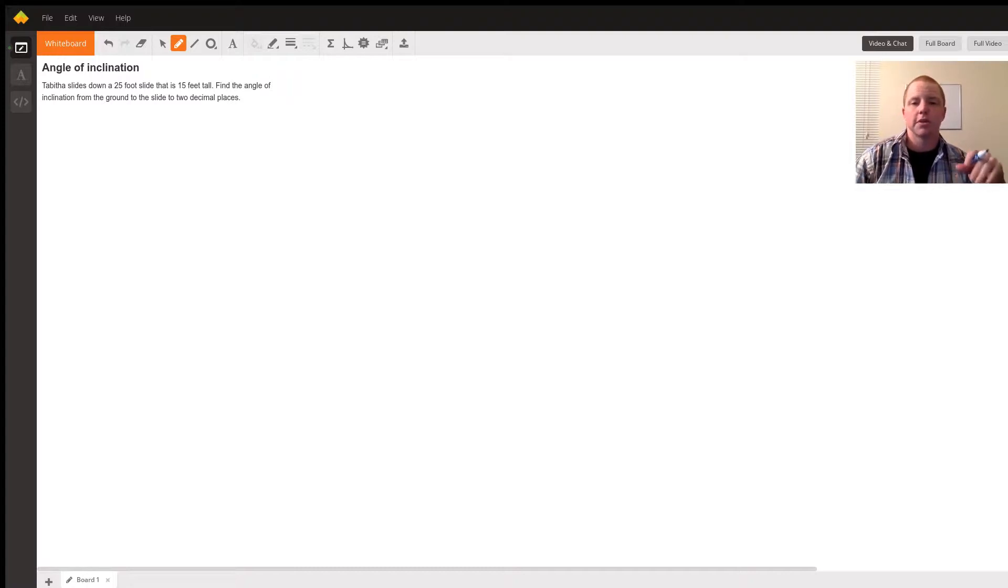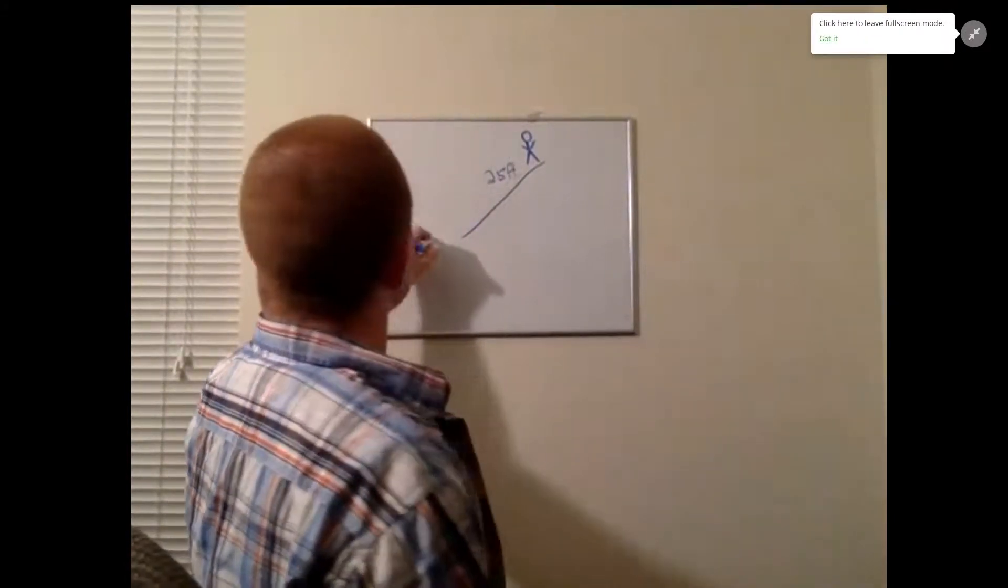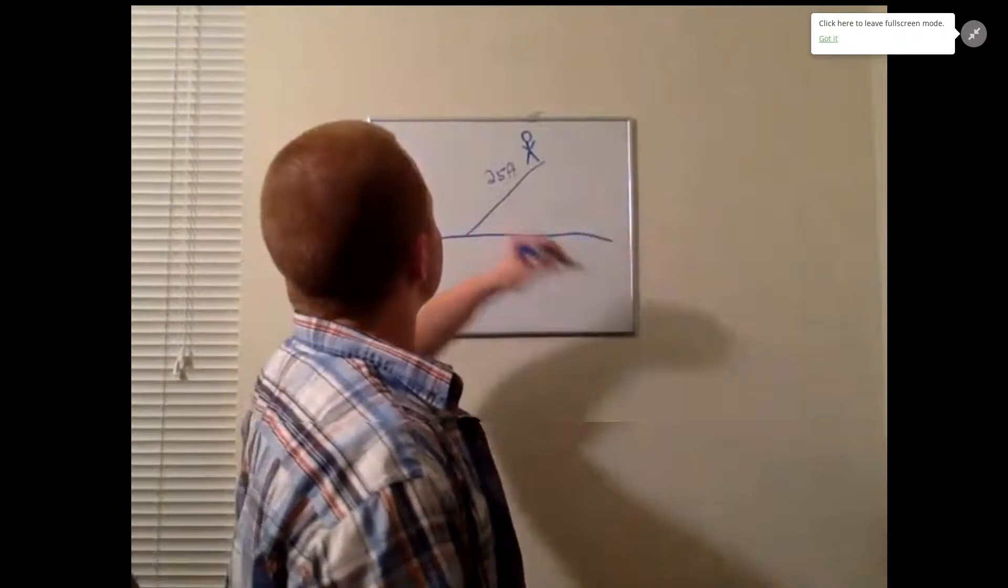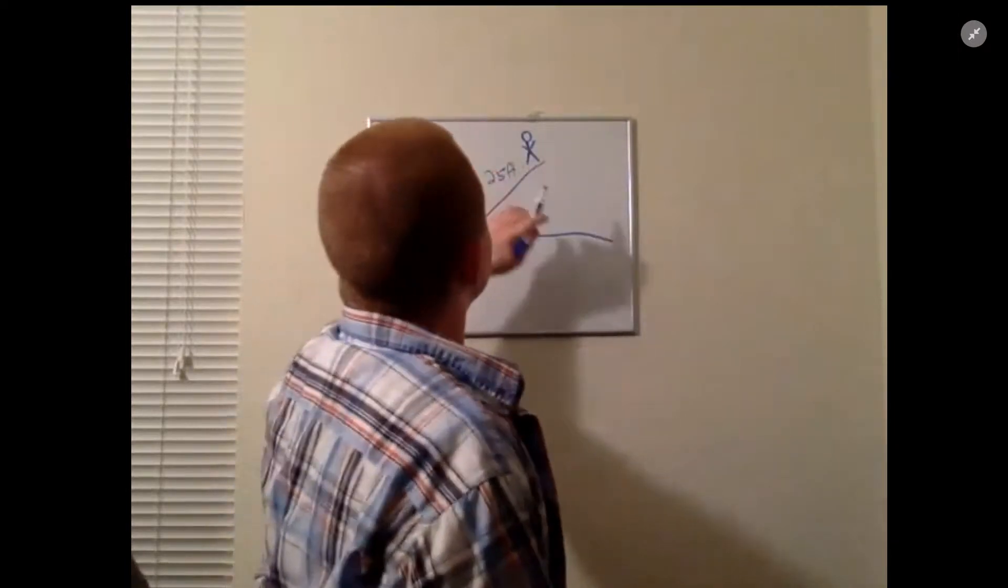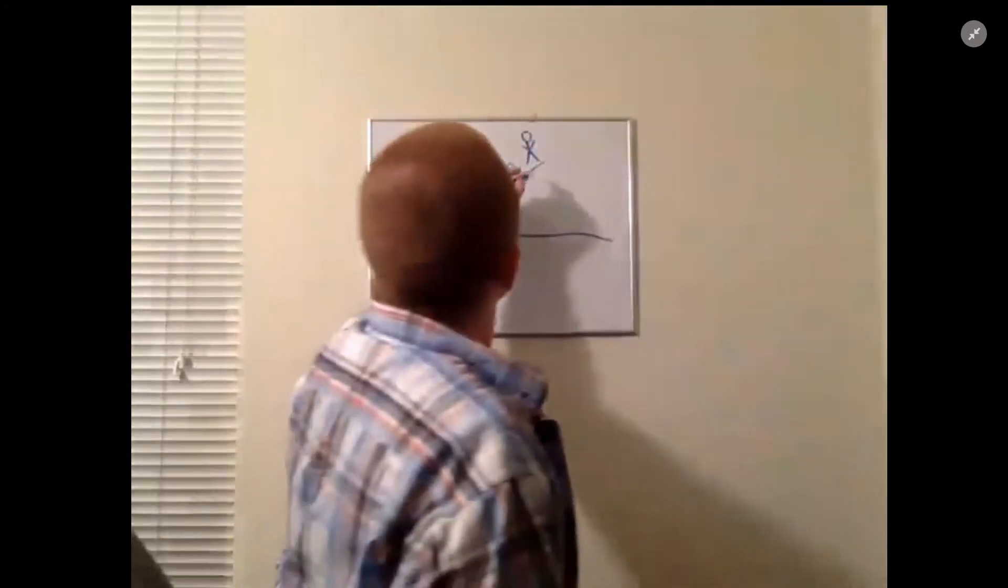So we have a slide, Tabitha's having fun and sliding down a slide. The slide is 25 feet long and it's 15 feet tall. Here's the ground. So the slide is 25 feet and it's 15 feet high, that would be the height from the ground. So that'll be 15 feet.